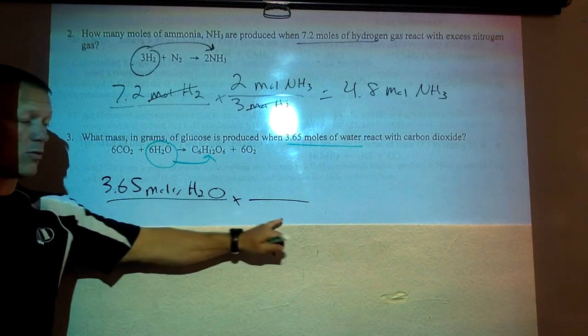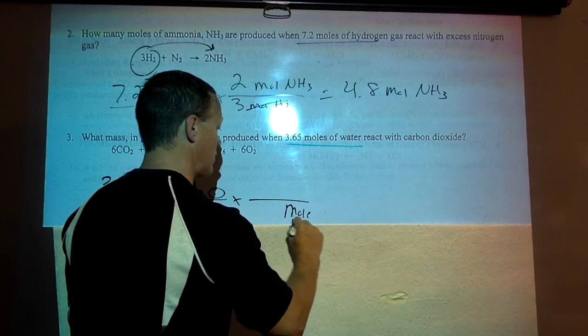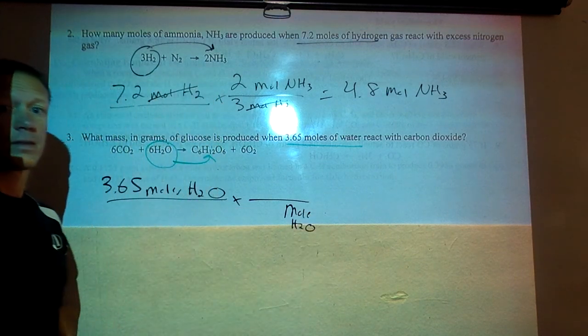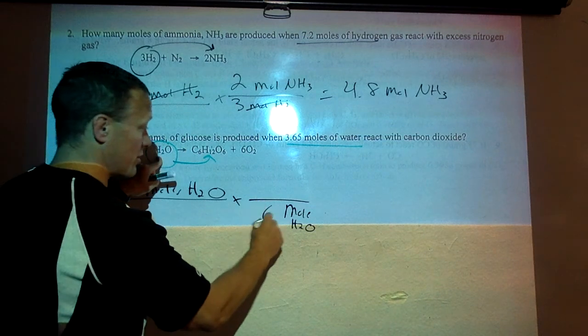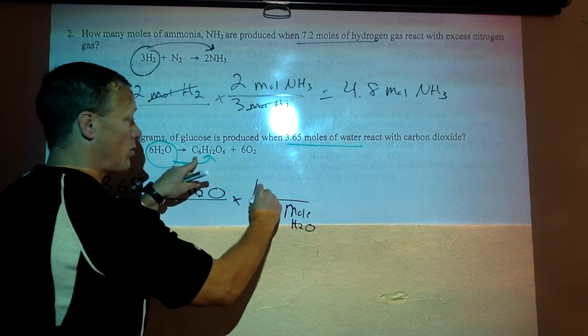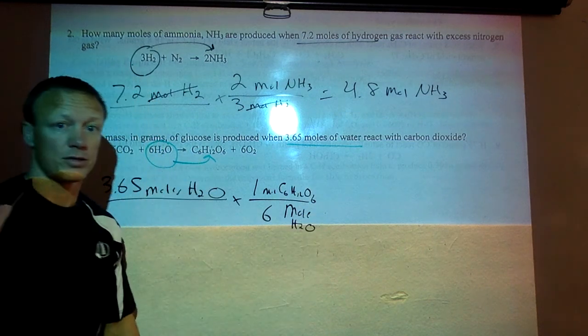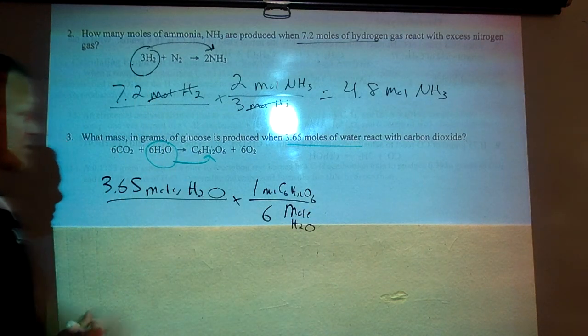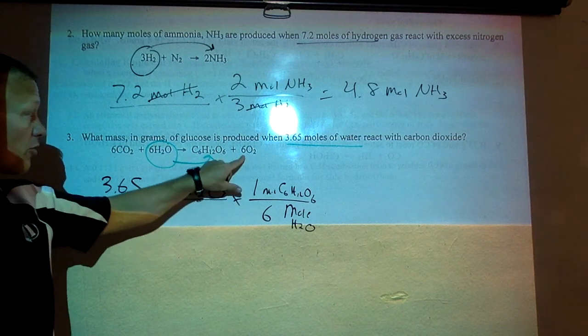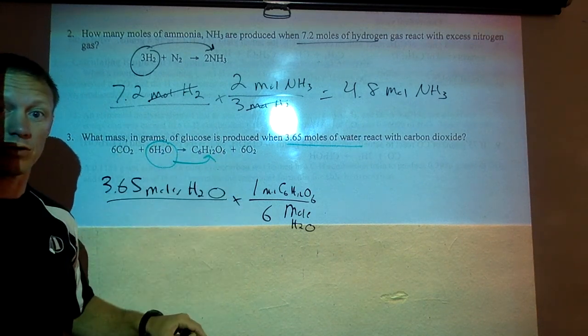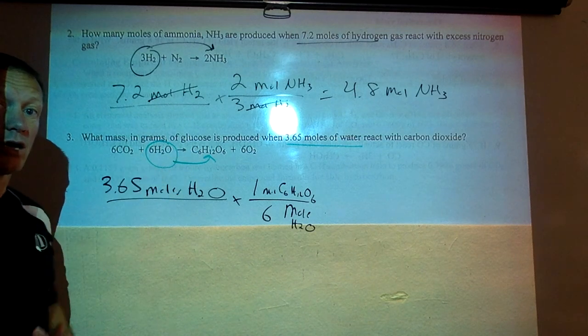Again we're starting with moles so we know we need moles of water down here. The label is always up to cancel. We're going to our ratio. So for every six moles of water that we use in this reaction, there's one mole of glucose produced. Again this problem just happened to ask us about glucose. It could have asked us about carbon dioxide or oxygen. The glucose is a one to six ratio here.